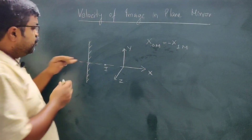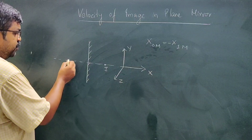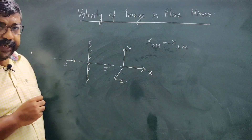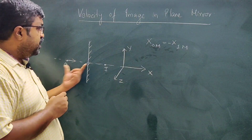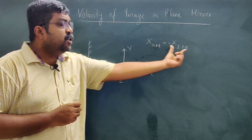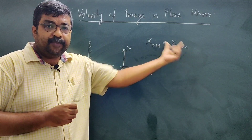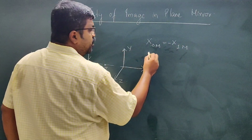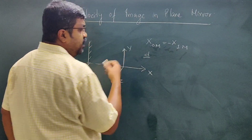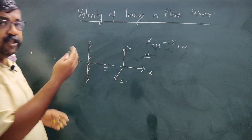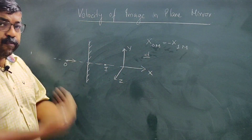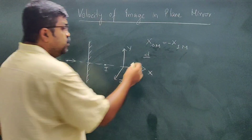Now, if the object is moving along the x-axis, this distance will change, and the image distance will also change. How do we measure this change? Change in position with respect to time — if the object is moving, its position is changing with respect to time.